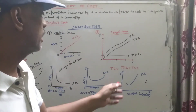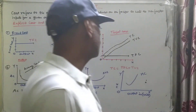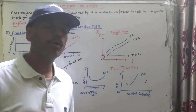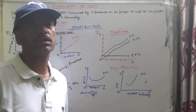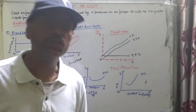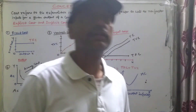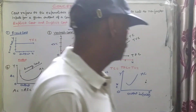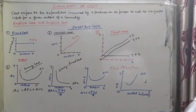Marginal cost is the cost for one additional unit. The extra cost incurred for one additional unit of output is called marginal cost. That is all for today. Thank you.